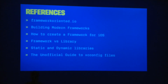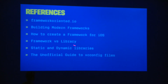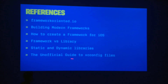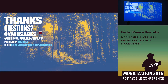A few references: first, a website I created to talk about the tools. There's also documentation that gives tips about how to apply SOLID principles to this setup, an article about how to build modern frameworks, and one about how to create frameworks for iOS. The difference between framework and library: a framework can include resources like storyboards, fonts, and images — libraries can't. There's also a resource about static and dynamic linking, and one about xcconfig that explains things Apple doesn't tell you about. Thank you very much, and if you have any questions please feel free to ask.